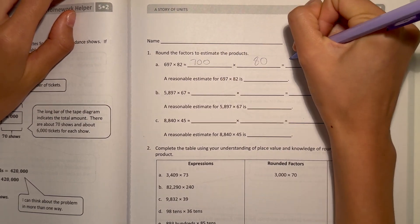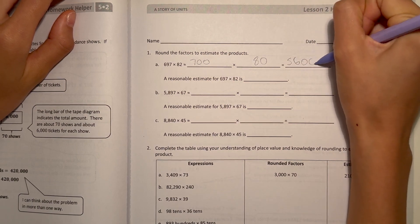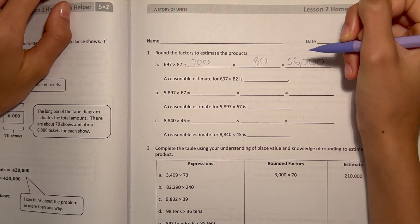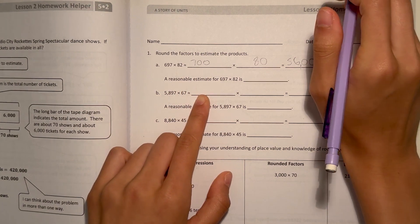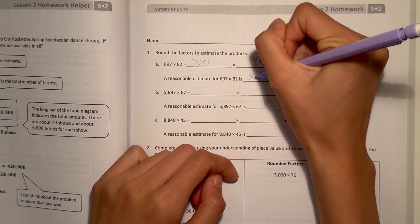Well, 7 × 8 is 56, and there's 1, 2, 3 zeros. So our answer is 56,000. Now, a reasonable estimate for 697 × 82 is 56,000.